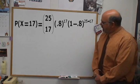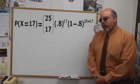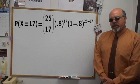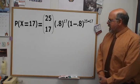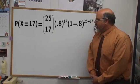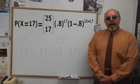You raise the P to the K times, in other words, 17 in this specific example. And then the 1 minus P, you're going to raise it to the difference between N and K, which is 8. Let's multiply that out.